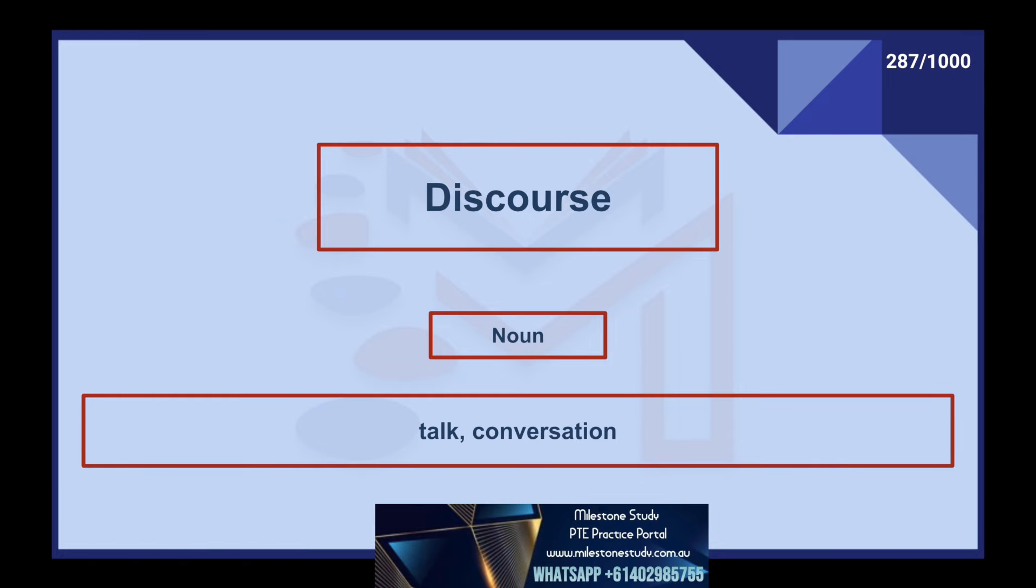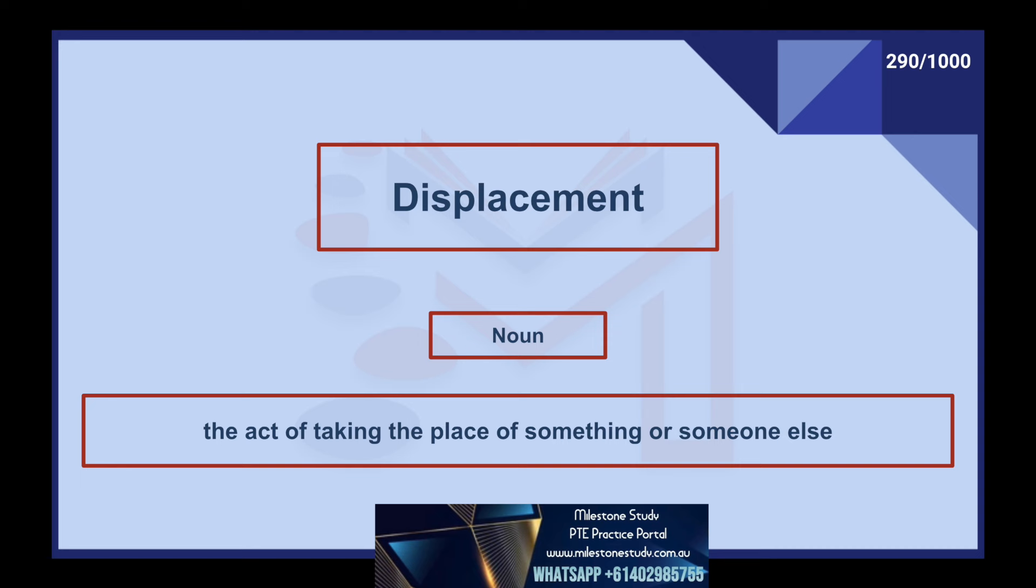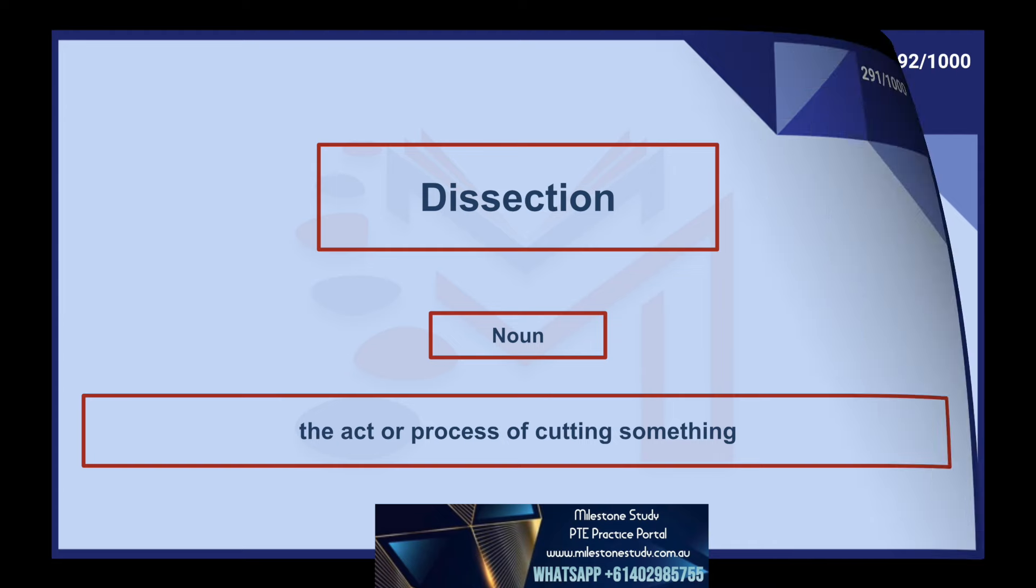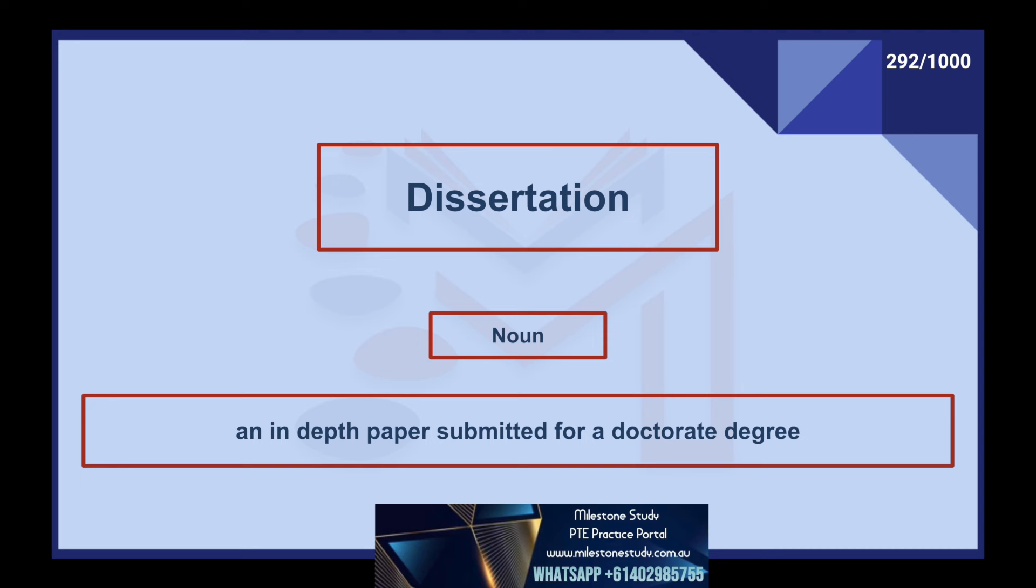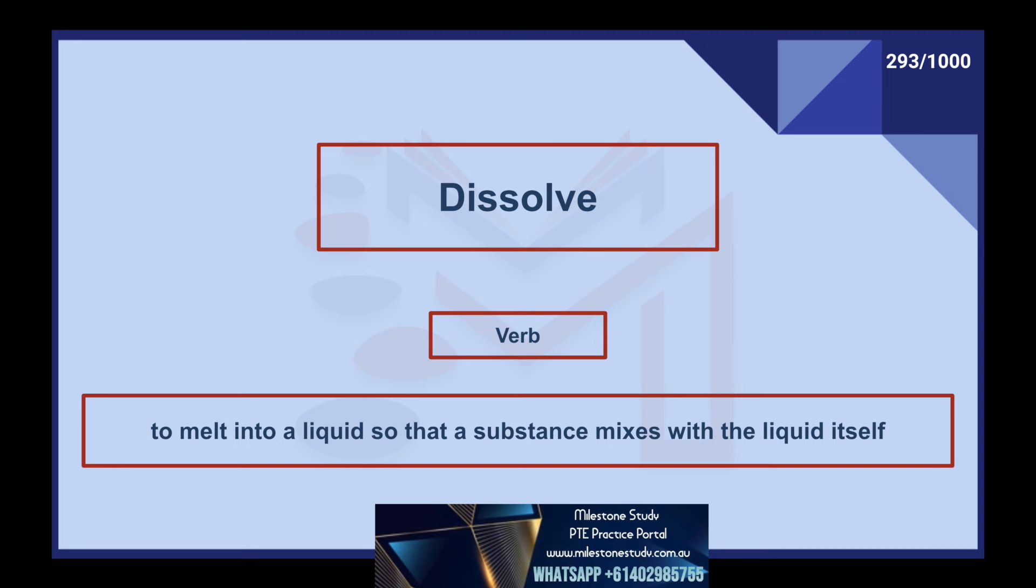Discourse, noun: talk, conversation. Discrete, adjective: separate, composed of distinct parts. Discrimination, noun: the ability to recognize the difference between things, treating different groups of people unfairly. Displacement, noun: the act of taking the place of something or someone else. Dissection, noun: the act or process of cutting something. Dissertation, noun: an in-depth paper submitted for a doctorate degree. Dissolve, verb: to melt into a liquid so that a substance mixes with the liquid itself.